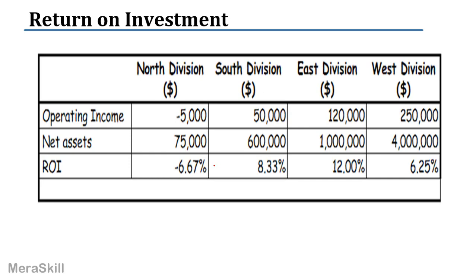Let's take an example. One company has four divisions: North, South, East, and West. Looking at the operating income of each division: North division has minus 5,000; South has 50,000; East has 120,000; and West has 250,000. Prima facie, looking at absolute numbers in ascending order, West division has the highest operating income. North is suffering losses, South has nominal profit, East has made much more, and West has made the most — very good profits.